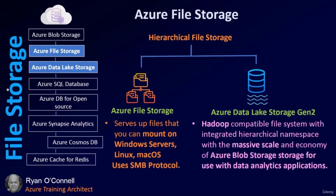Azure File Storage serves up files that you can mount on Windows servers, Linux, or macOS using the SMB protocol. On top of that, we have Azure Data Lake Storage Gen 2 — a Hadoop-compatible file system with an integrated hierarchical namespace and massive scale, built on Azure Blob Storage economics for use with data analytics applications.